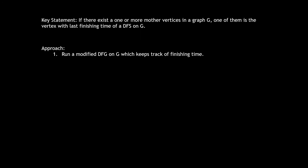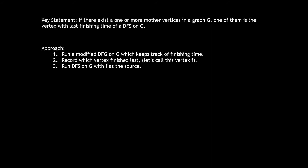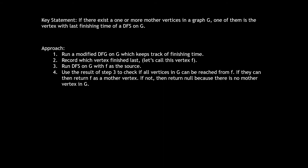Under this assumption our solution is straightforward. First, run a modified DFS that tracks finishing time on G, recording whatever vertex finishes last — call it F. Then, since F must be a mother vertex if any exist, run DFS again using F as the source. This second DFS terminates as soon as all reachable vertices from F have been visited. If all vertices are reached, F is a mother vertex; if not, there is no mother vertex in G.